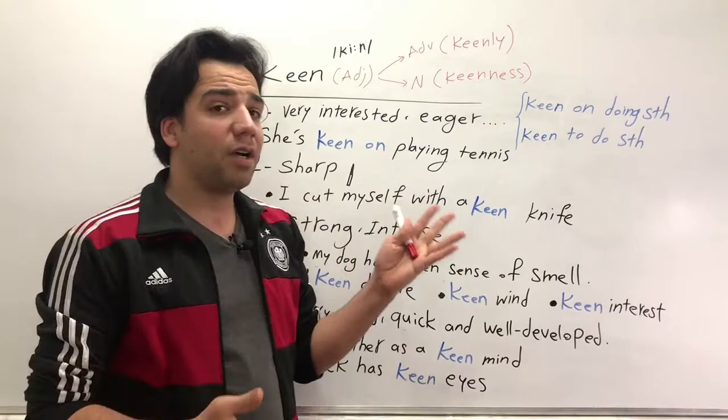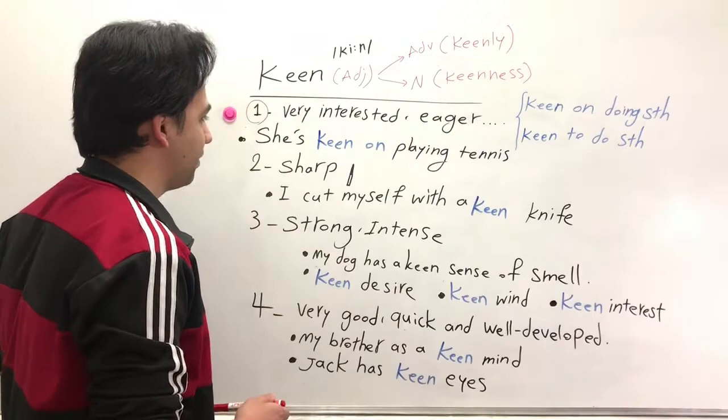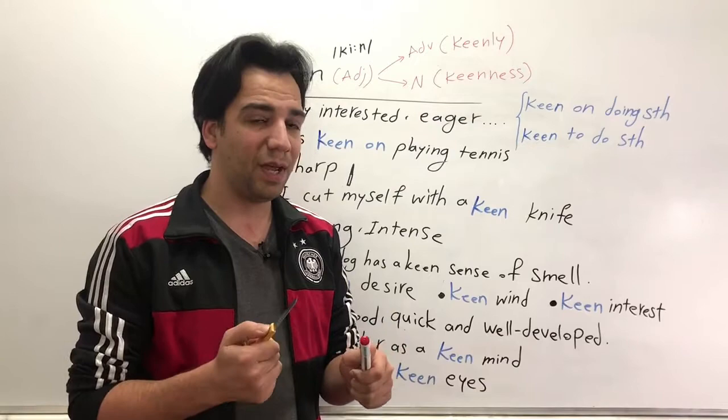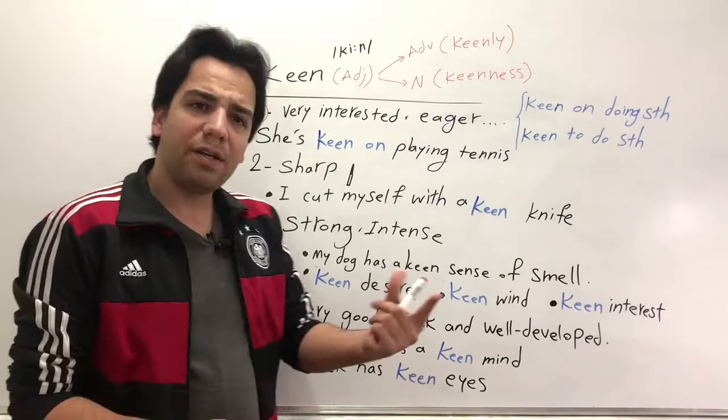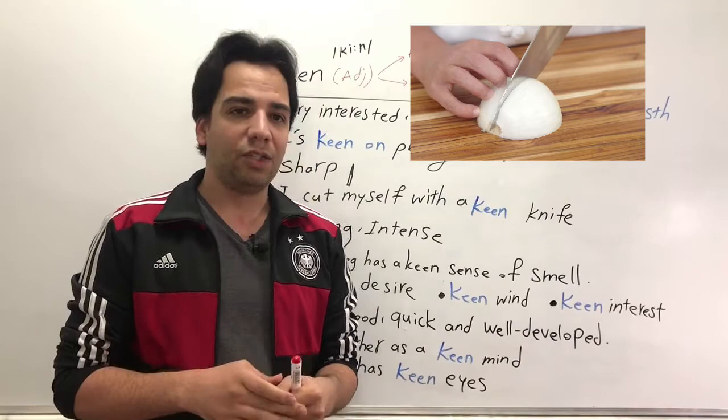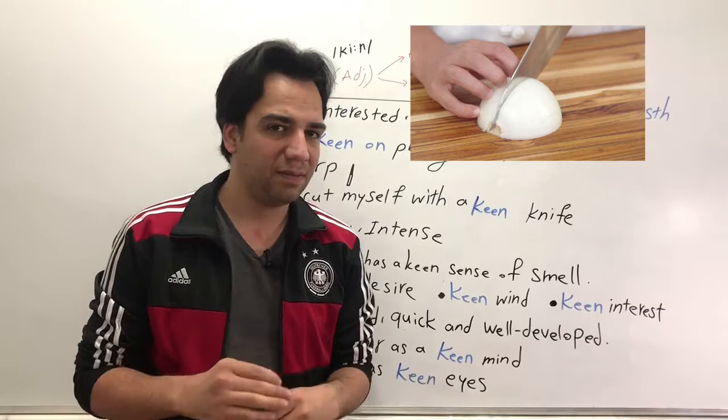The second meaning of keen means sharp. Yes, as you can see, this knife is very sharp. So we can use keen here. For example, the other day I was in the kitchen chopping onions and I just cut myself with the keen knife—yes, with the sharp knife—and my finger started to bleed. Sometimes I'm not very careful.